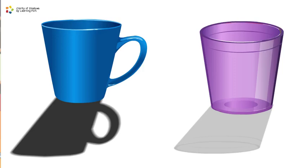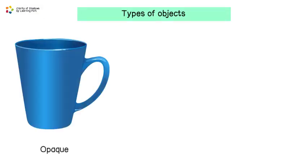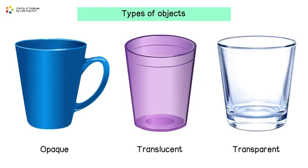Why is this so? The clarity of a shadow depends on the type of object that light passes through. There are three types of objects: opaque, translucent, and transparent.